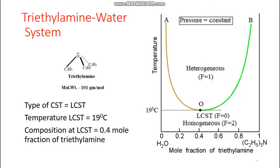Now we have the trimethylamine-water system. The molecular weight of trimethylamine is 59 g/mol. This system has only a lower CST. The general rule is: if the third substance is soluble in only one of the components, the mutual solubility decreases; if the third substance is soluble in both, the mutual solubility increases.